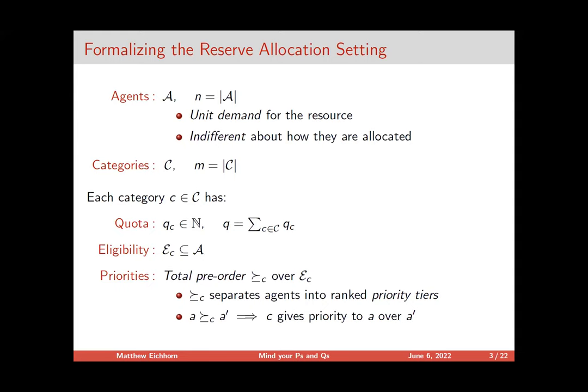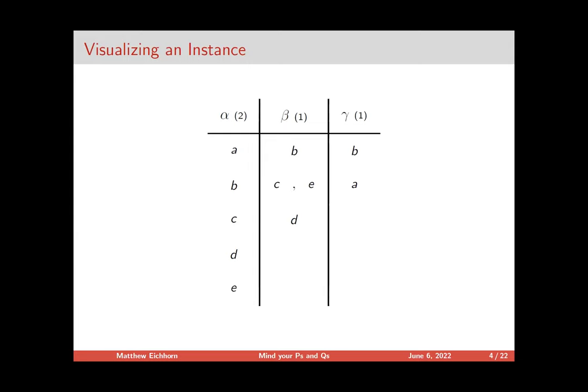We also have categories — these are the ways that people get allocated. Each category has information about which individuals it would like to give to. First, it has its quota of how many units it's allowed to assign out. Then it specifies which agents are eligible to receive an allocation in that quota. And a more fine-grained measurement is priority — who does it want to allocate to — expressed as a pre-order placing individuals into ranked tiers. The picture is something like this T-chart, where each column is one of these categories, eligible people are ranked down it from top to bottom in decreasing priority, and the numbers at the top encode the quota.